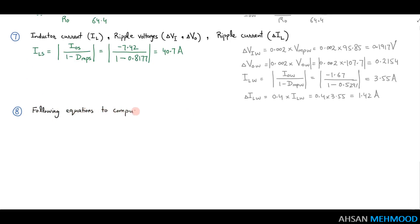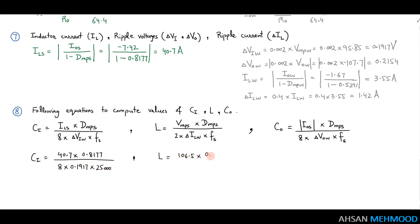In the final and eighth step, the following equations are used to compute the values of input capacitor, inductor and output capacitors of the buck boost converter. Keep in mind that these are the buck boost converter's modified equations which were developed by trial and error. These formulas have no mathematical foundation and just provide you with the estimated optimum parameter values.